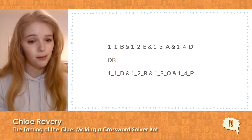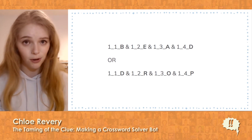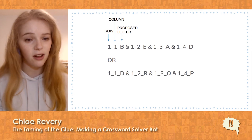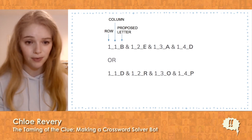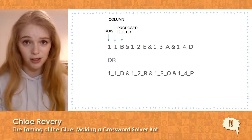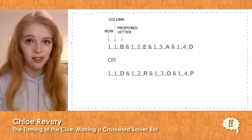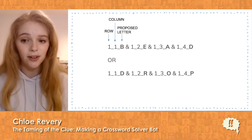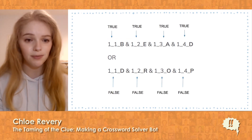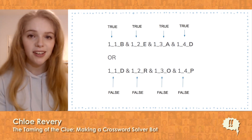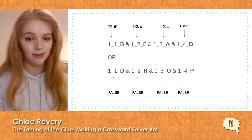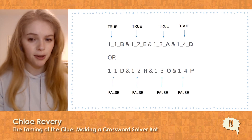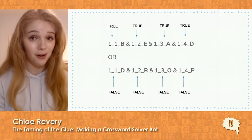Each variable has a special notation to make it more human readable — it contains the row and column number of the square and a possible value to fill it. If we feed this expression into a SAT solver algorithm, such as zchaff, it will output something like this, telling us that the solution to the puzzle for one across is 'bead.' When I applied this formula to the entire puzzle and ran it through the SAT solver algorithm, bam — I got a pretty filled puzzle.